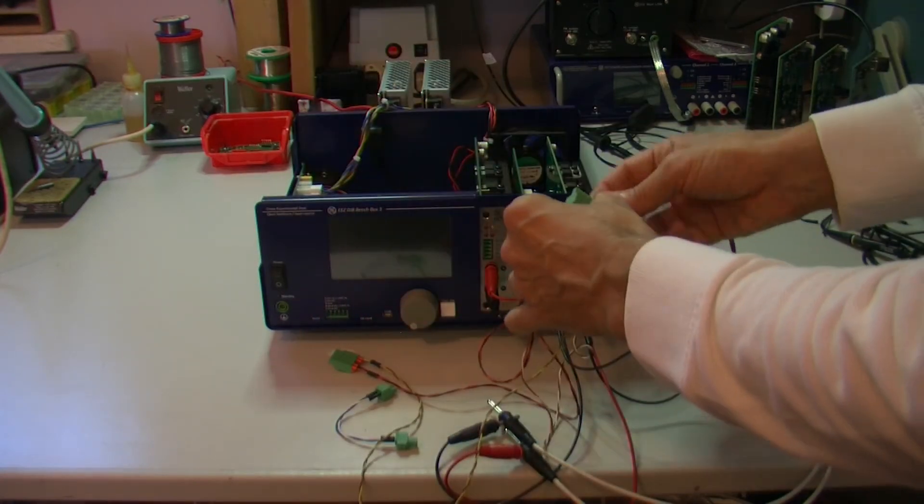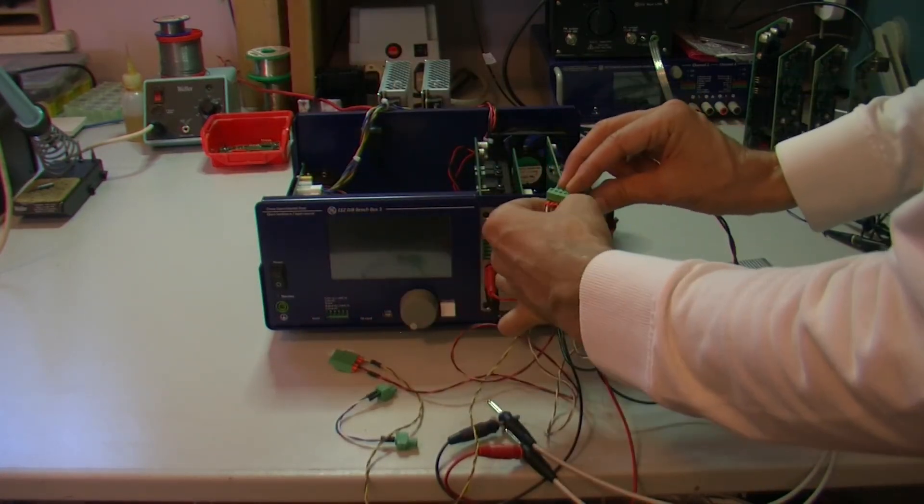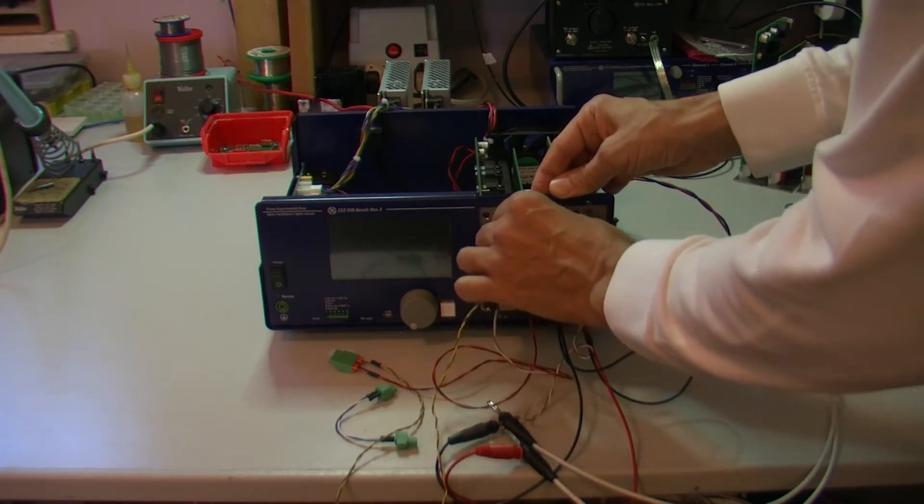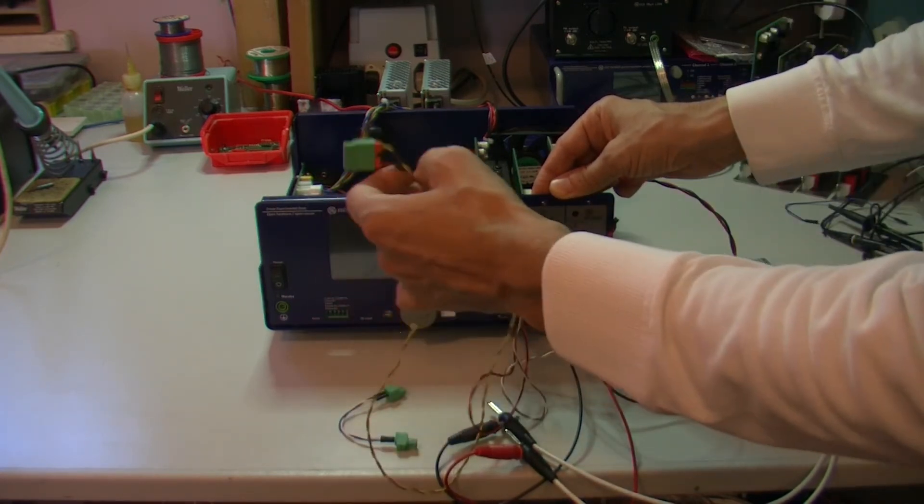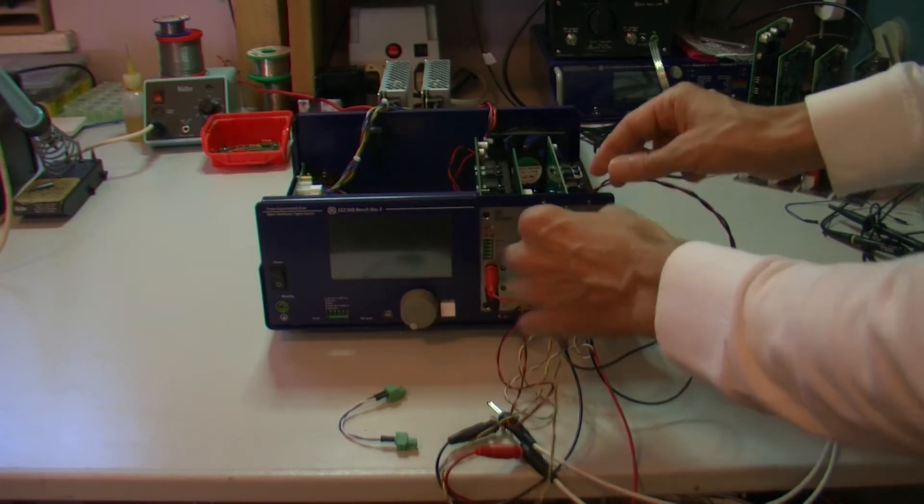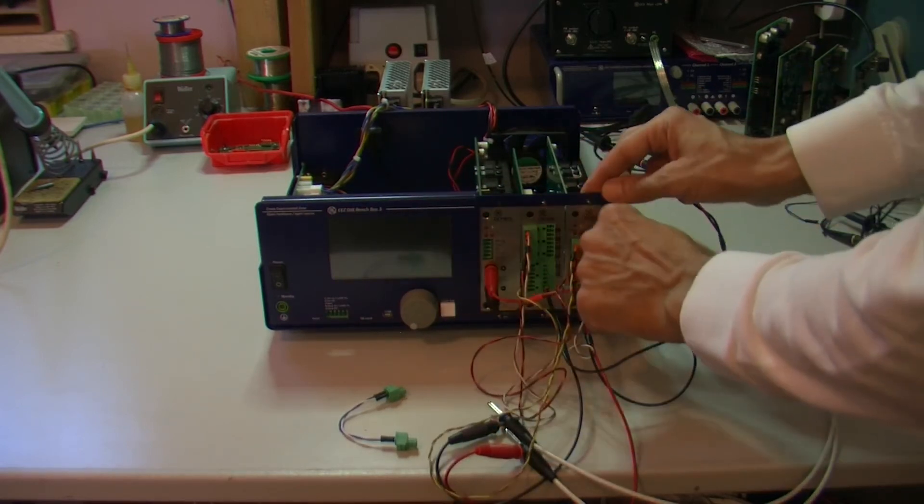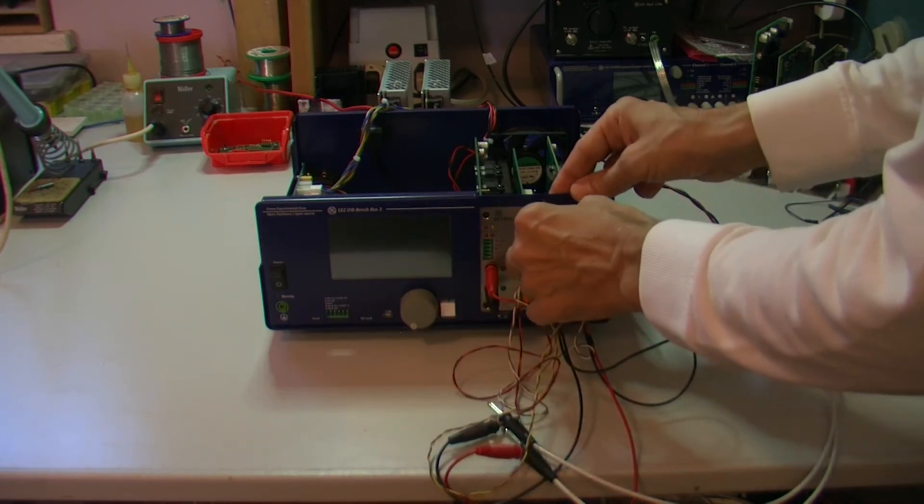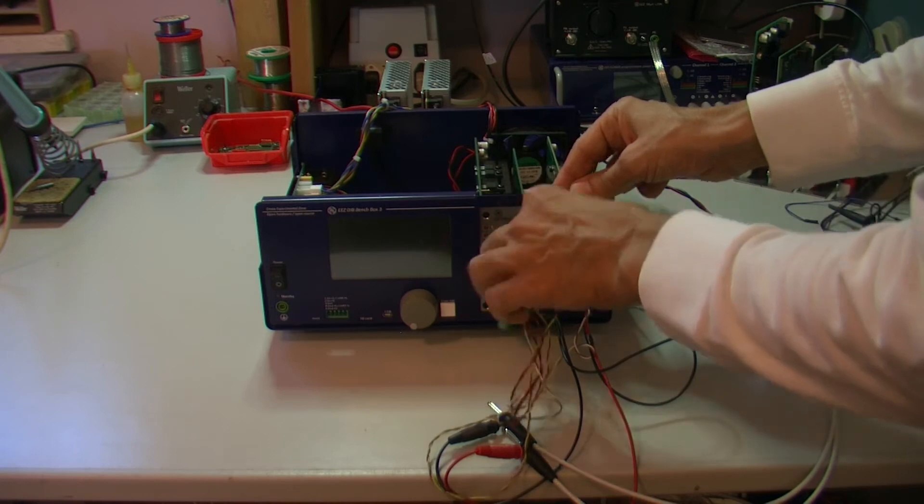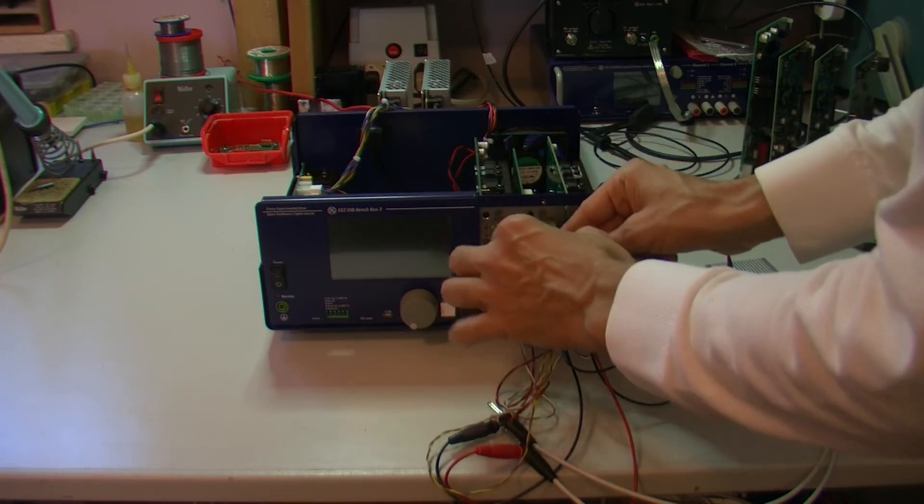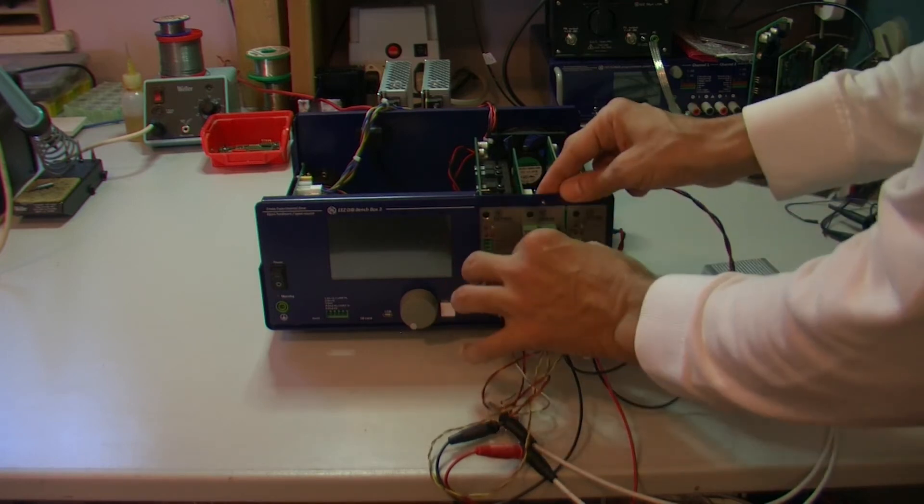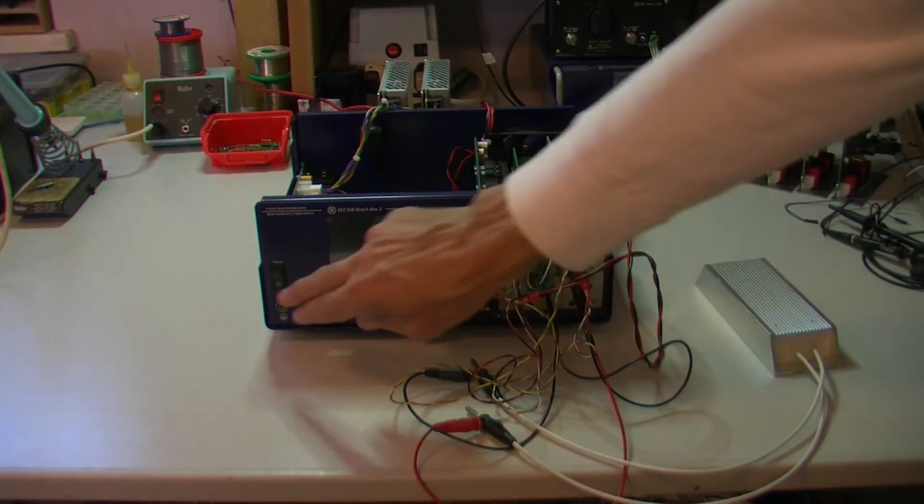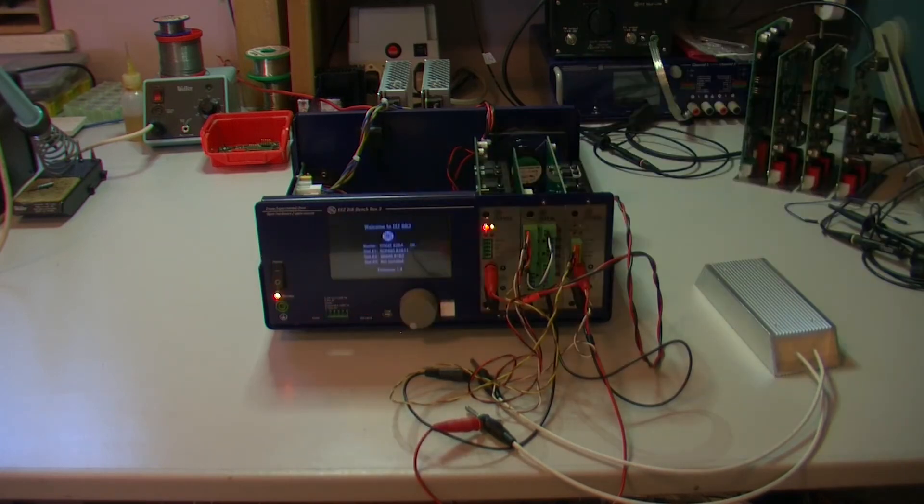Then we will need to check what's going on with remote sensing and with remote programming, which goes here, and finally we need some analog output to make some testing with remote programming. Now if we turn on BB3,